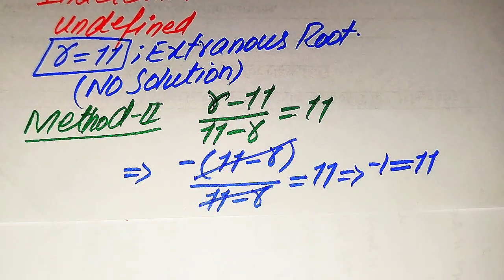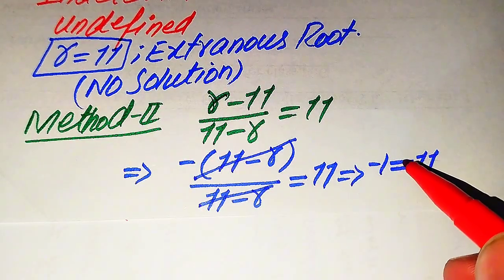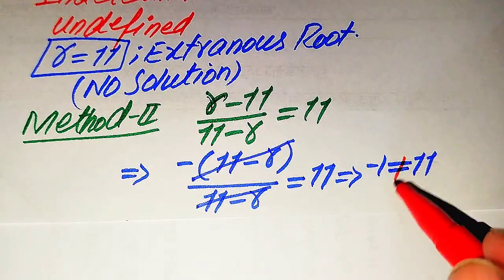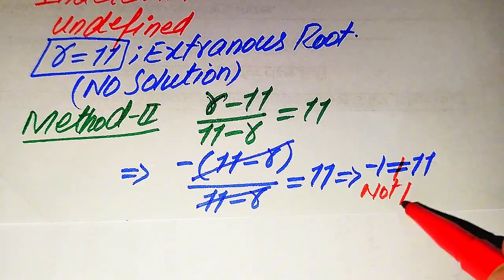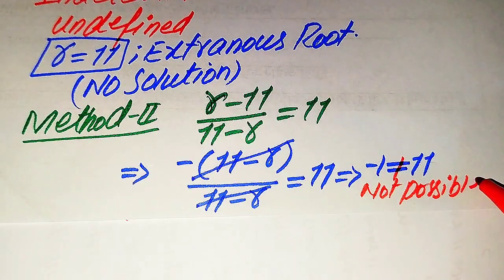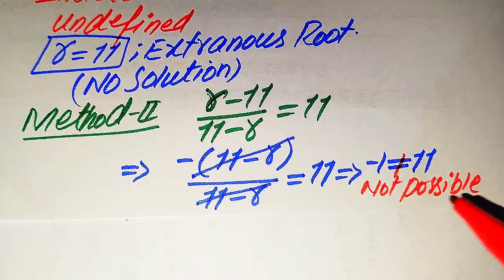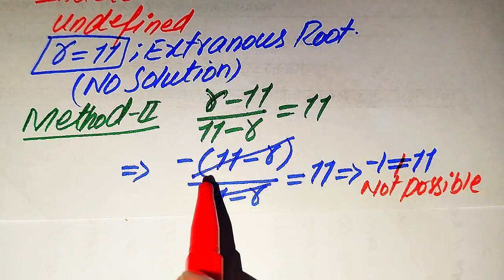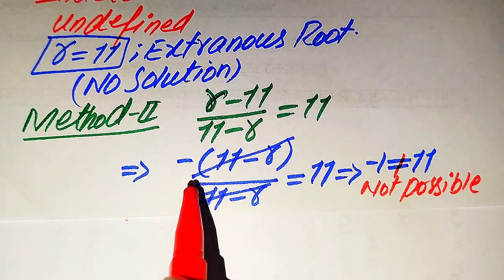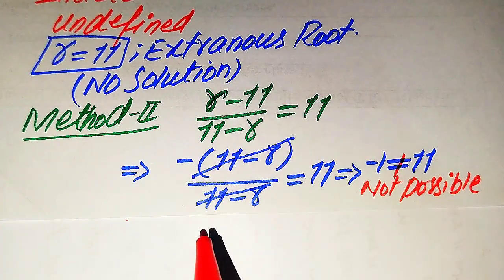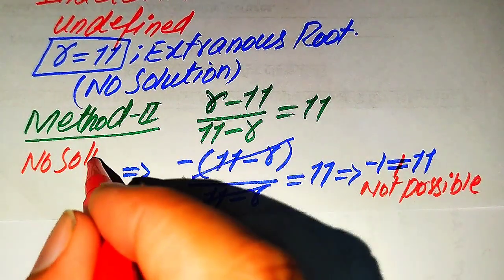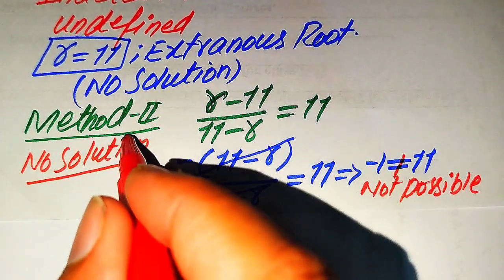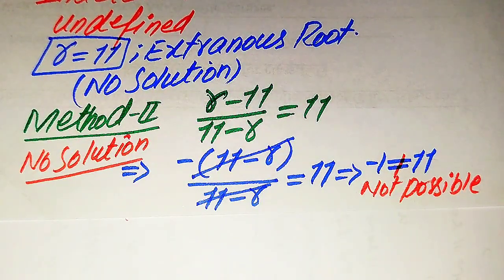Since minus 1 is not equal to 11, both sides are not equal — this is not a possible case. We cannot get any value of r from this equation in the second method. This means the question has no solution. This is the final answer. Thank you so much for watching this video; please subscribe to my channel for more videos.